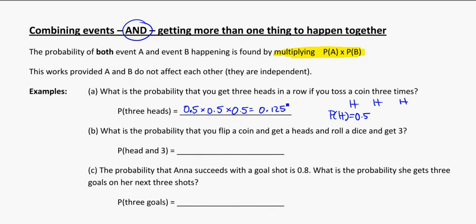Again, they shouldn't have any influence on each other. The fact that I get a head the first time doesn't change whether I get a head the second or third time. In this case, because it's the same event—flipping a coin—it's the same probability all three times.